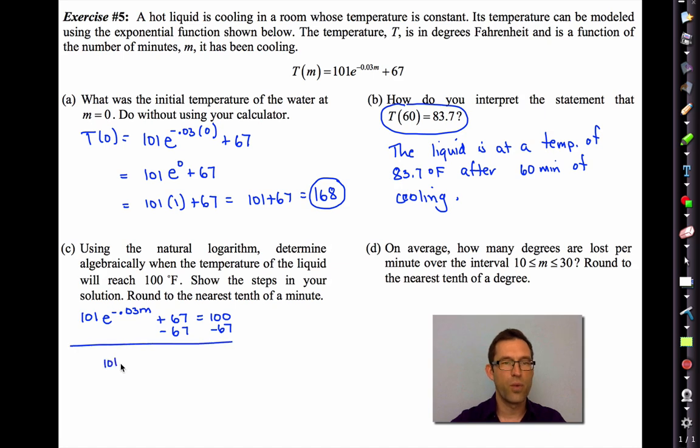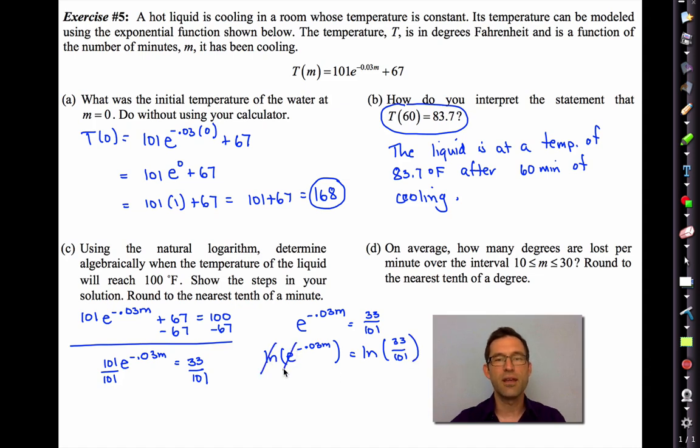That's going to leave me with 101e^(-0.03M) = 33. Now I'm going to get rid of the 101 by dividing by it on both sides. And that's going to leave me with e^(-0.03M) = 33/101. Now normally at this point, since I'm solving an exponential equation, I could really use any logarithm I want. But we're going to use the natural logarithm for one very specific reason. And that isn't because they told me in the problem, although that would certainly be a good enough reason.